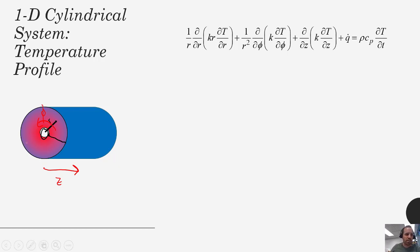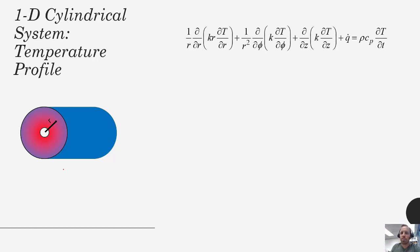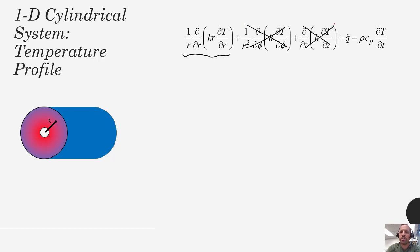Here is the heat equation for radial systems, which we introduced in chapter two of these lectures. If we look at the heat equation, we can eliminate terms where we're not expecting a temperature gradient in that particular direction. We do have temperature variation in the R direction, so we keep that term. However, we do not have temperature variation in the phi direction or in the Z direction.